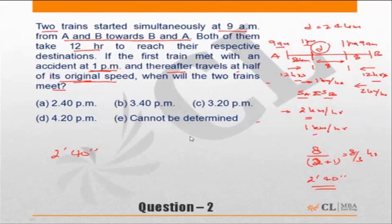So they will be meeting 2 hours 40 minutes after 1 p.m. Remember, we had shifted the base from 9 a.m. to 1 p.m., so we're calculating the time taken after 1 p.m. The answer is 2 hours 40 minutes after 1 p.m., or in other words, the trains will meet at 3:40 p.m.